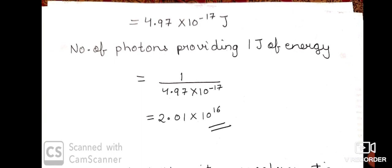The explanation using quantum theory of the photoelectric effect — what Einstein explained based on photoelectric effect — we will see in the next lecture. In the next lecture, we will complete dual behavior, see the graphs Einstein gave according to photoelectric effect, and start atomic spectra. Thank you.